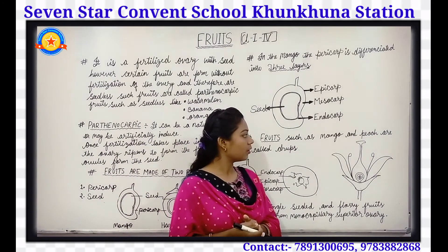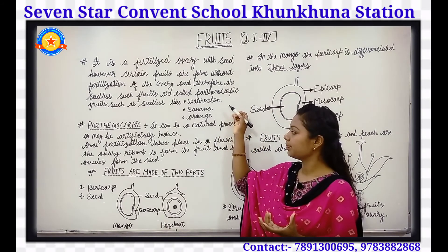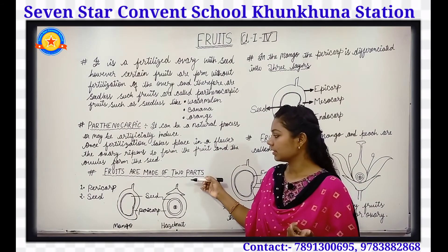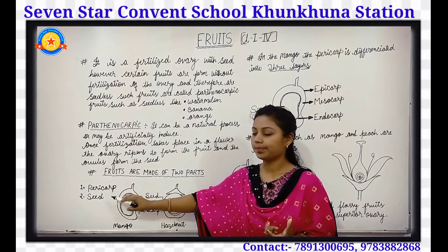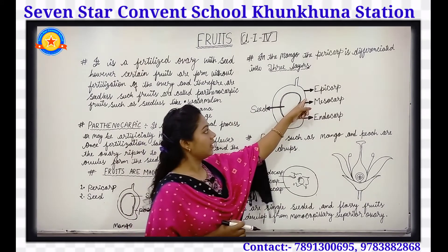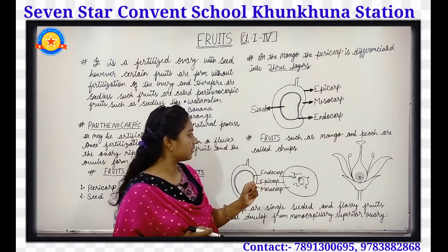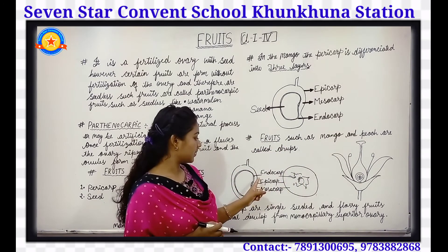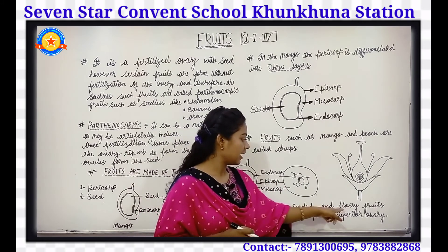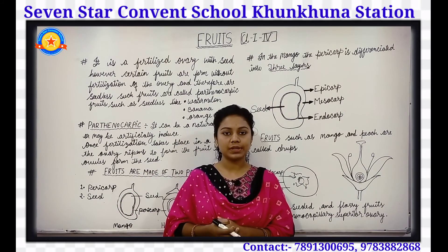I hope children, you all understood. We have learned about fruits, what is parthenocarpic — it can be natural or artificially induced. We learned about the two parts of a fruit: pericarp and seed. In mango, we have three layers — epicarp is the outer layer, mesocarp is the middle layer, and endocarp is the innermost layer. Fruits such as mango and peach are called drupes, which are single-seeded and fleshy fruits developing from a monocarpellary superior ovary.